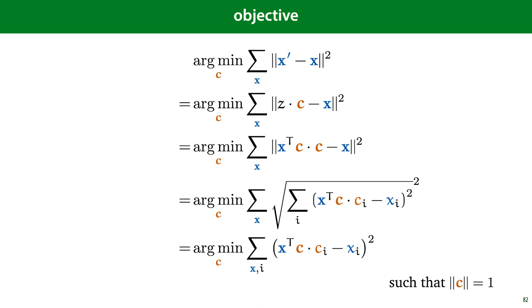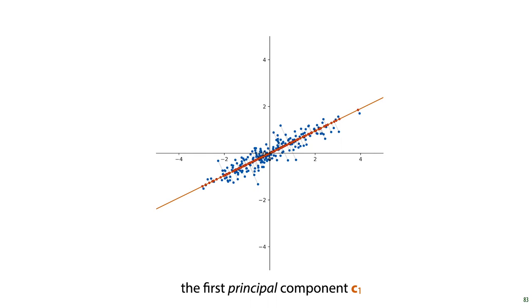So if we do this, we run gradient descent, then this is the solution that we find. It looks pretty good. It's hard to imagine any other line c leading to shorter gray lines. And indeed, c is uniquely defined by this optimization objective. We call c the first principal component of the data.